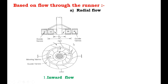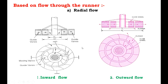The outer diameter of the runner is the inlet and the inner diameter is the outlet. The next classification is the outward radial flow reaction turbine. In this, water from the casing enters the stationary guide wheel, whose guide vanes direct the water to enter the runner, which is positioned around the stationary guide wheels. The water flows through the vanes of the runner in the outward radial direction.